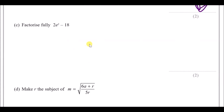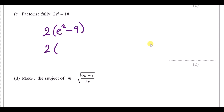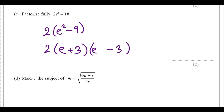Part c: fully factorise 2e² minus 18. First, take out the common factor of 2 to get 2(e² minus 9). Notice e² minus 9 is a difference of two squares — a square term minus a square number — so it factorises as (e + 3)(e − 3). The fully factorised answer is 2(e + 3)(e − 3).